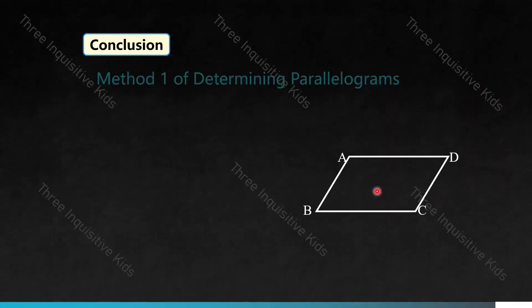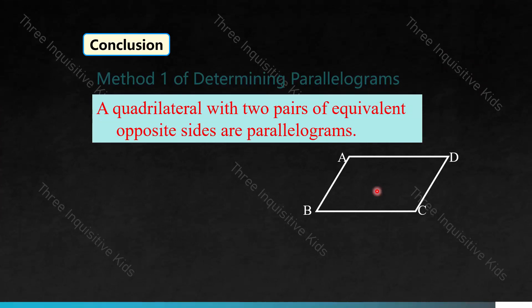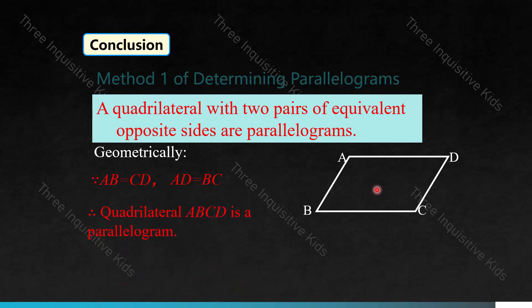Conclusion — Method one: a quadrilateral with two pairs of equivalent opposite sides is a parallelogram. Geometrically, if AB equals CD and AD equals BC, therefore quadrilateral ABCD is a parallelogram. In the proving process we use the symbols for 'since/because' and 'therefore' — this is almost like an if-then statement.